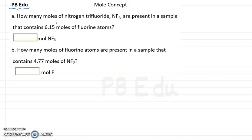Here we have a question: how many moles of nitrogen trifluoride, NF3, are present in a sample that contains 6.15 moles of fluorine atoms? We have a sample in which we are given that there is 6.15 moles of fluorine atoms.